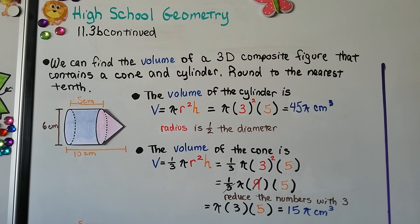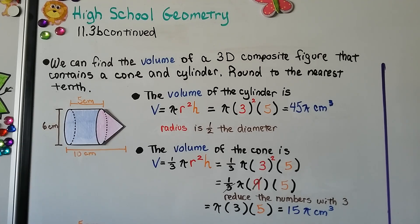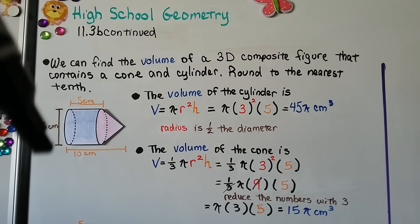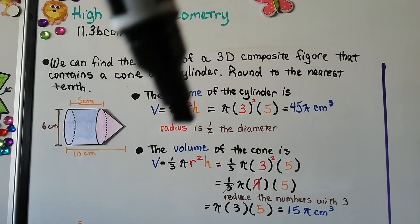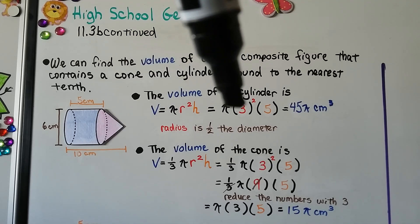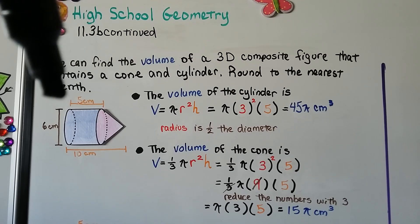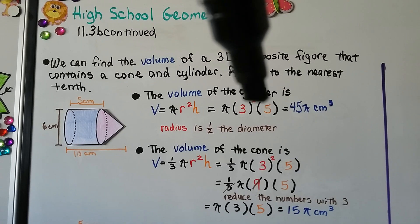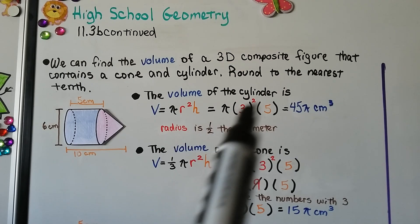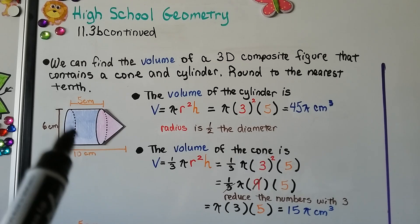We can find the volume of a 3D composite figure that contains a cone and a cylinder and round to the nearest tenth. The volume of the cylinder is, we can see the diameter is 6 centimeters, the radius is half the diameter, so our radius is 3. For the formula, we would do radius squared, so 3 squared. That's 9. The height of our cylinder is 5 centimeters, so we multiply it by the height 5. 9 times 5 is 45π centimeters cubed for the volume of this cylinder.